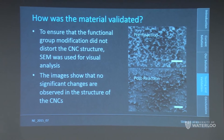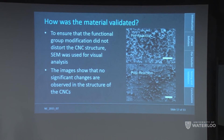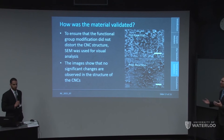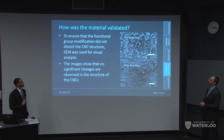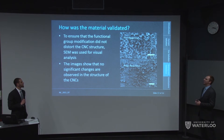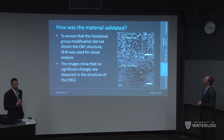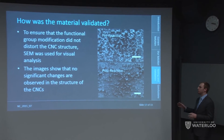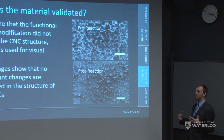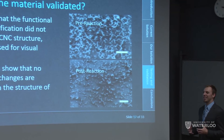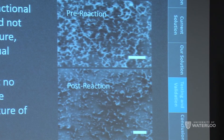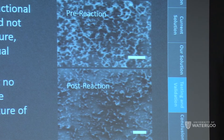We believe we have this material, but we need to prove we created what we think we created. SEM (Scanning Electron Microscope) images were taken to ensure the material's structure hadn't changed too drastically — we still want it to be a CNC after all. We confirmed that it is.